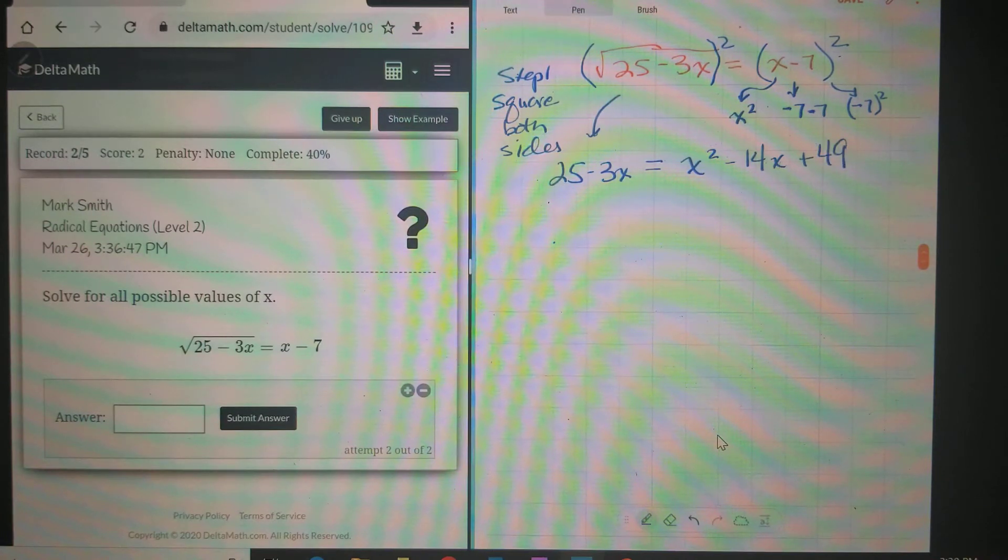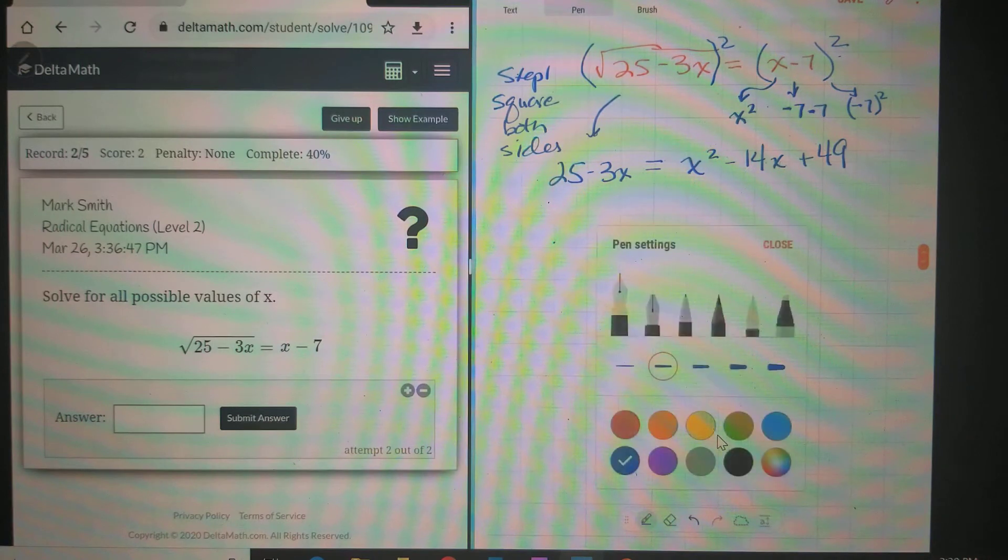So that's going to give us x² - 14x + 49. This is from our squaring binomials. Step one is done, we squared that.